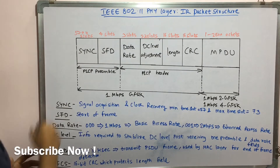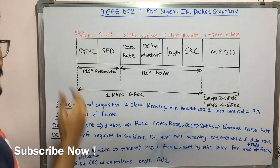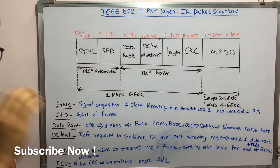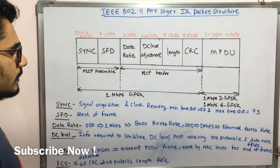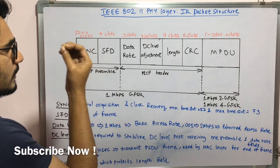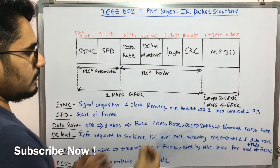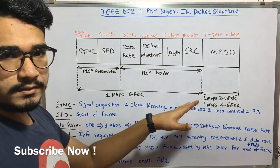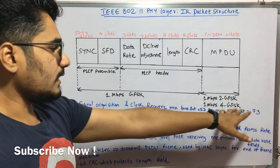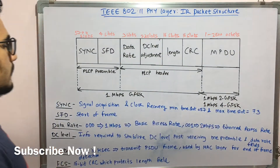Starting from the left-hand side, we have the SYNC field — that is the synchronization. It mainly deals with signal acquisition as well as clock recovery. There is a minimum and maximum time slot: the minimum time slot is 50 microseconds and the maximum time slot is 73 microseconds.